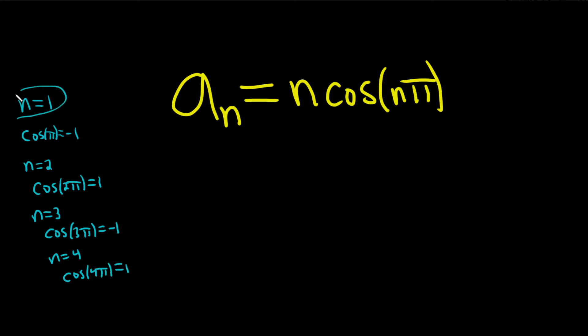So it looks like whenever n is odd, we're going to get negative 1. And whenever n is even, we're going to get 1. So the cosine of n pi is really just negative 1 to the n. Because when n is even, you get negative 1 to an even power, which is 1. When n is odd, you get negative 1 to an odd power, which is negative 1.